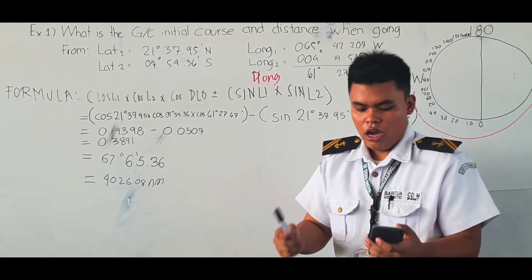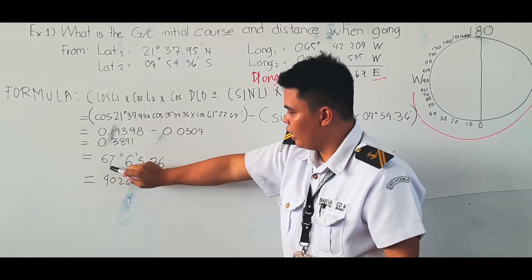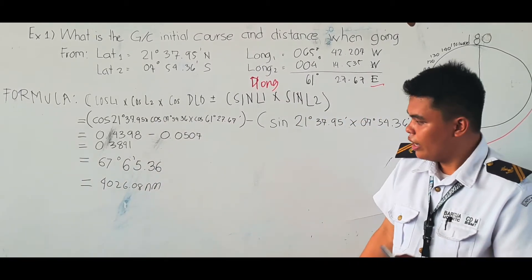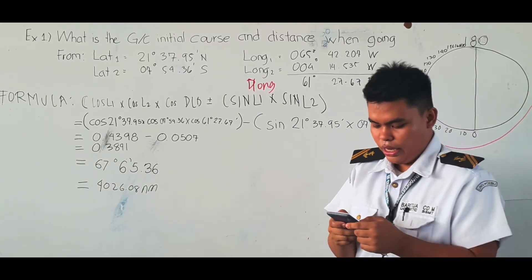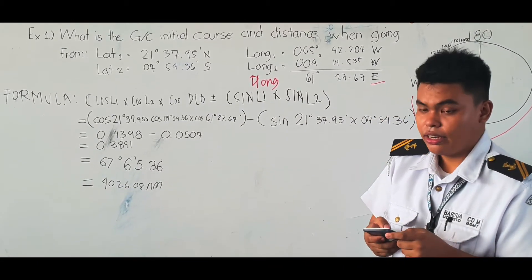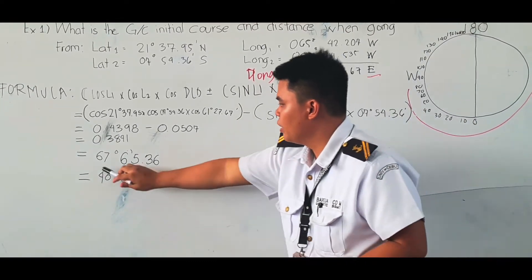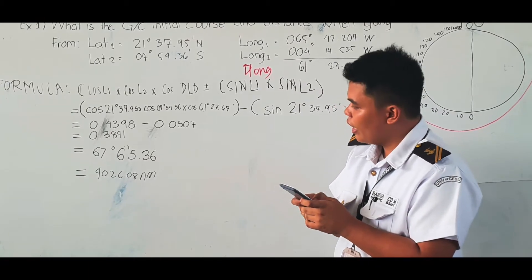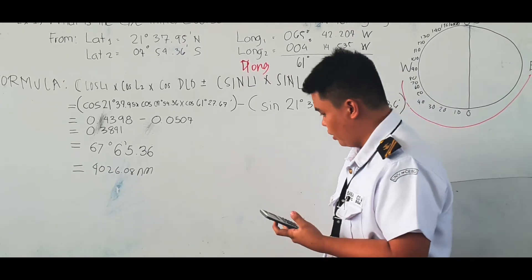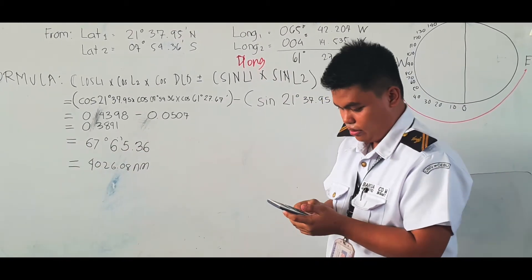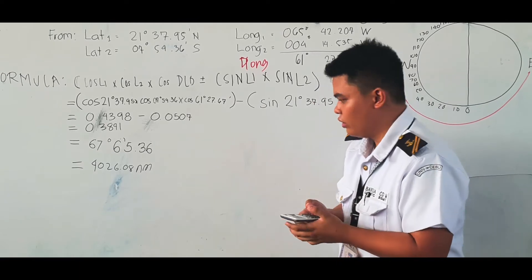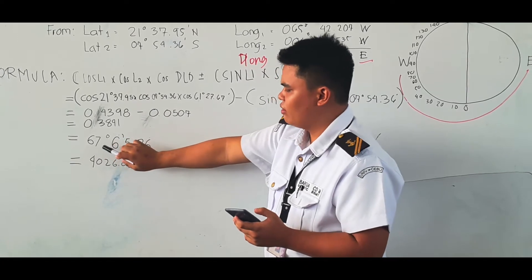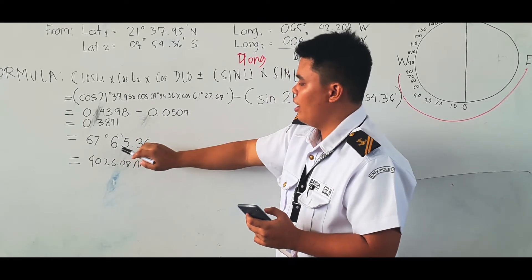To get 67 degrees 6 minutes and 5 seconds, we must do the shift cos function. Try it with your calculator to get this. Shift cos then write 0.3891 to get this answer. Try it with your calculator, and the answer is 67 degrees 6 minutes and 5 seconds.